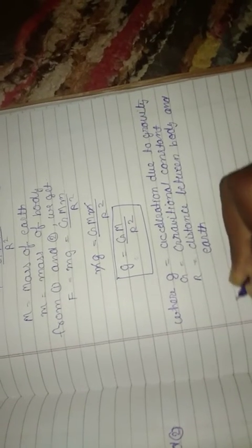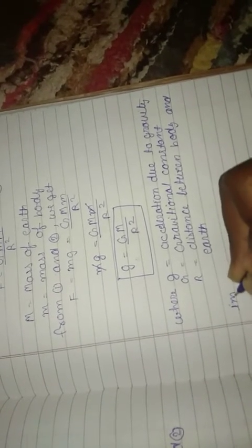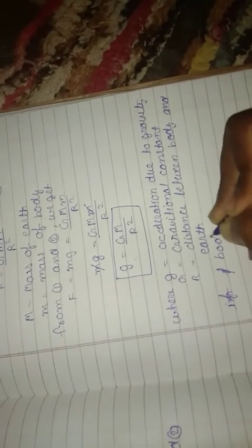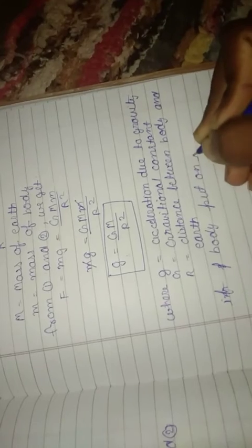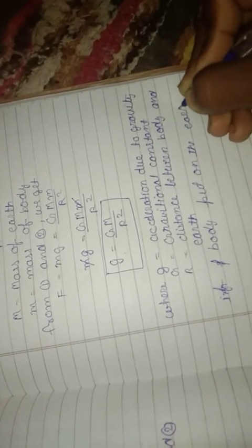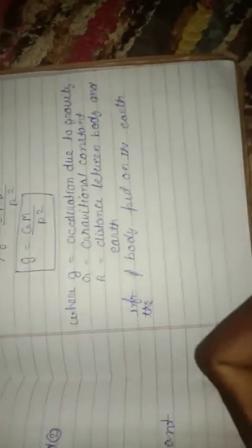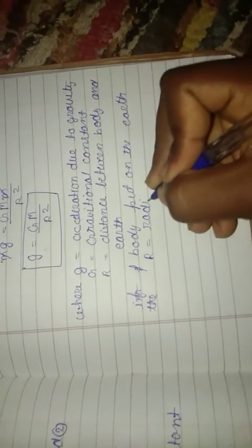If body is put on the earth, then r becomes radius of earth.